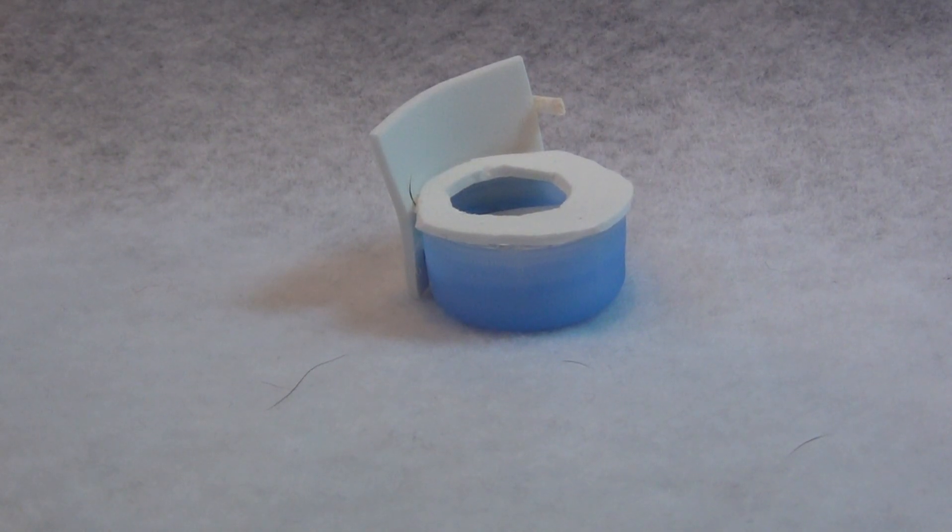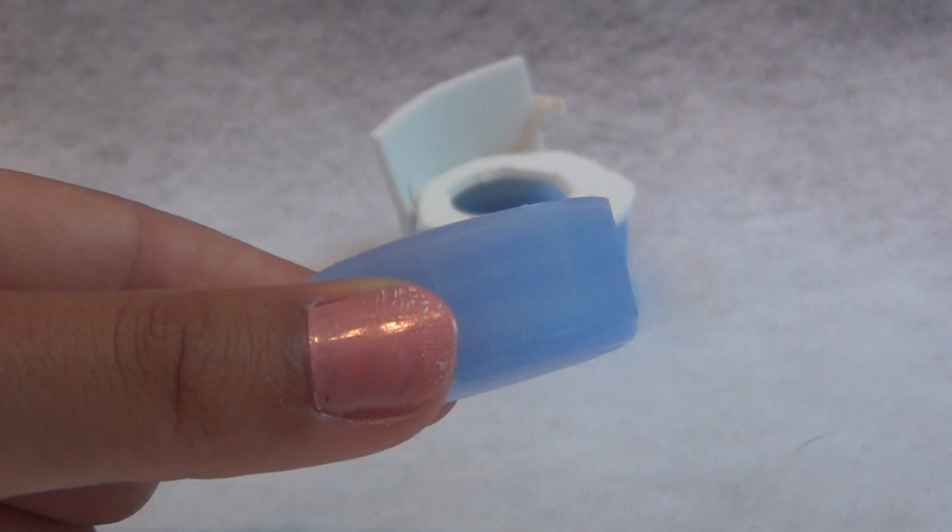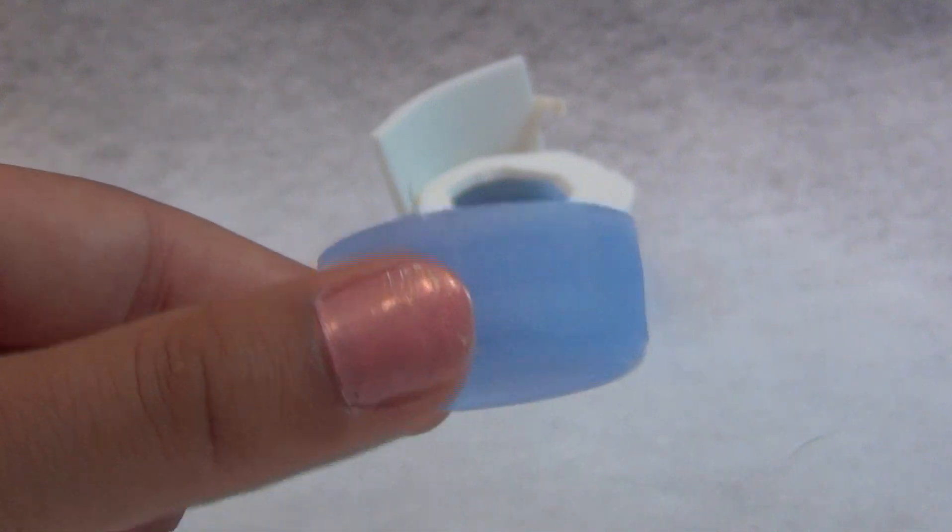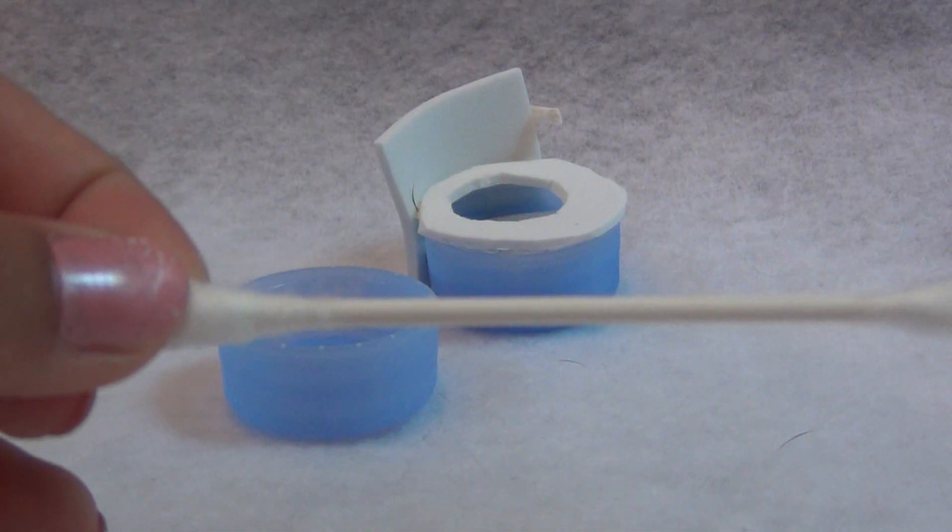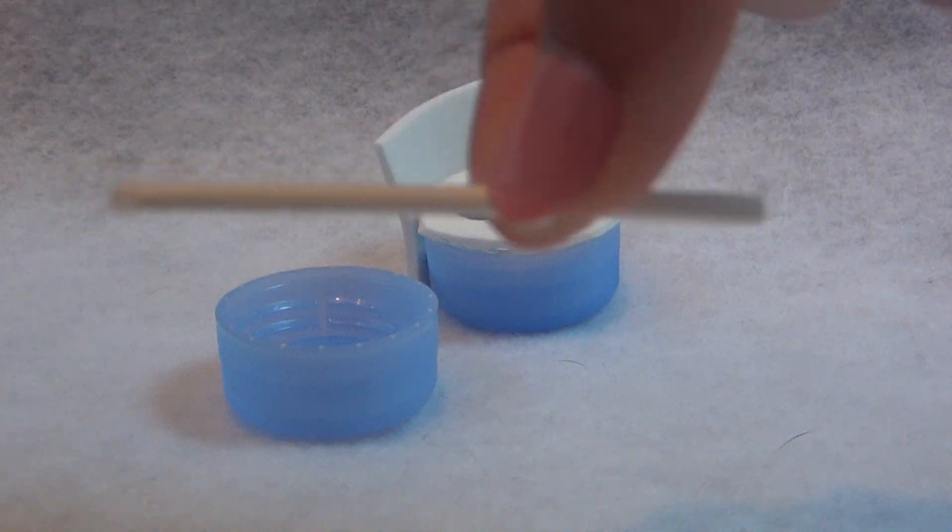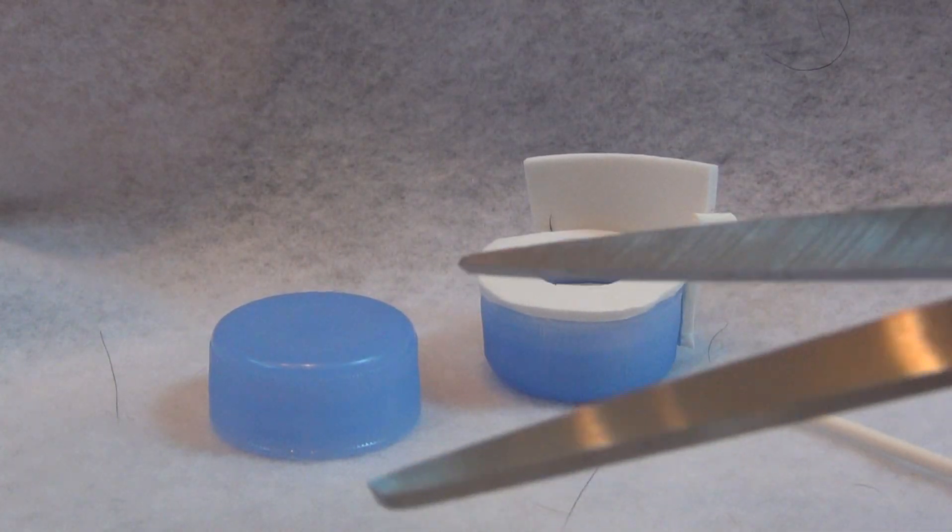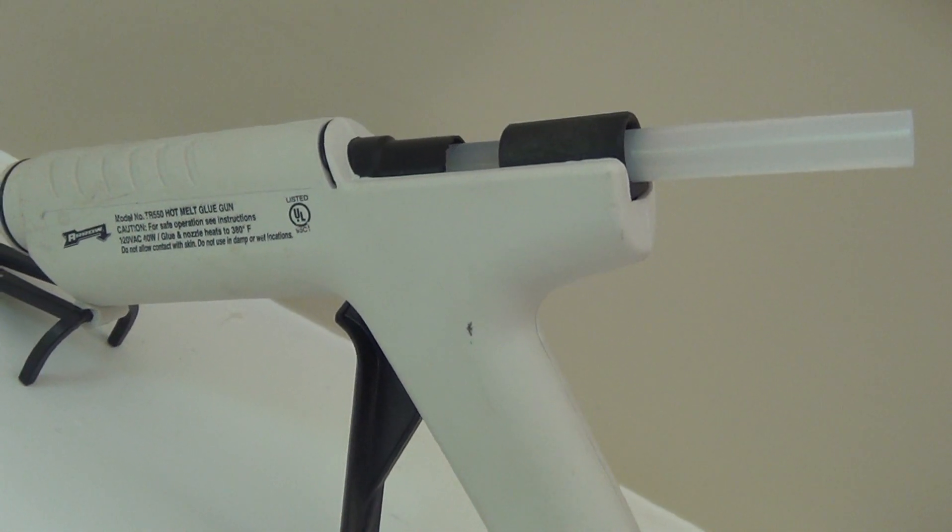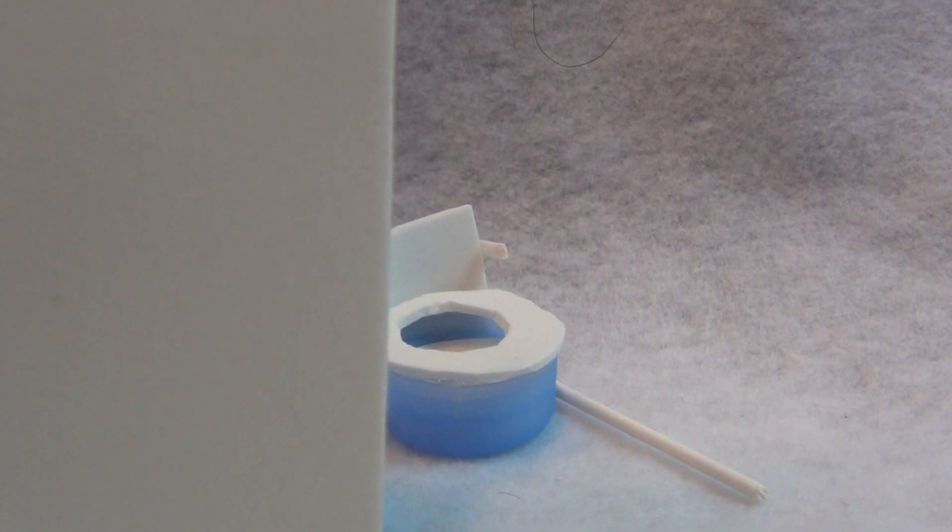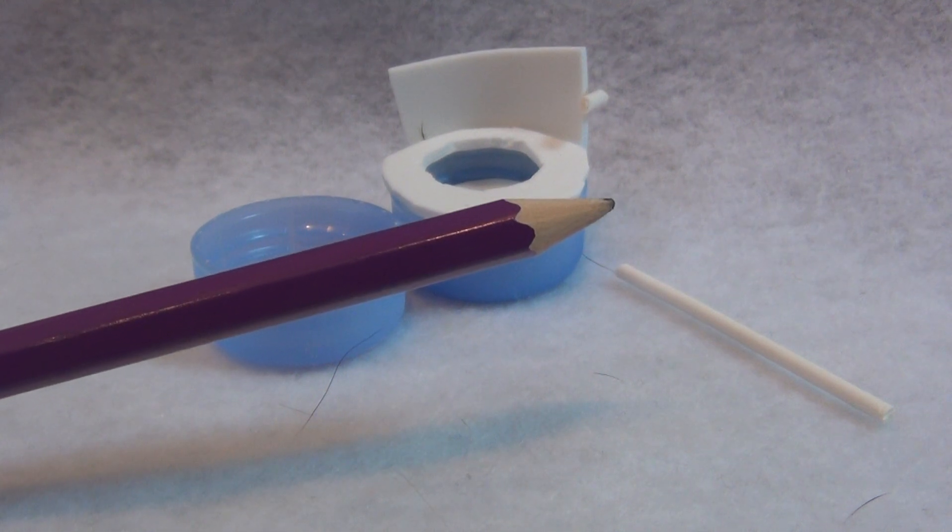The materials you'll need for the toilet are a bottle cap, preferably blue or white, a cotton swab with the ends cut off, scissors, a hot glue gun, and some white foam sheet. A pencil is optional.